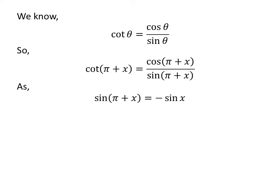As we know, the trigonometry identity sin of pi plus x is equal to minus sine of x. The proof of this trigonometry identity has been explained in the video appearing in the upper right corner. The link of the video has also been mentioned in the description section.